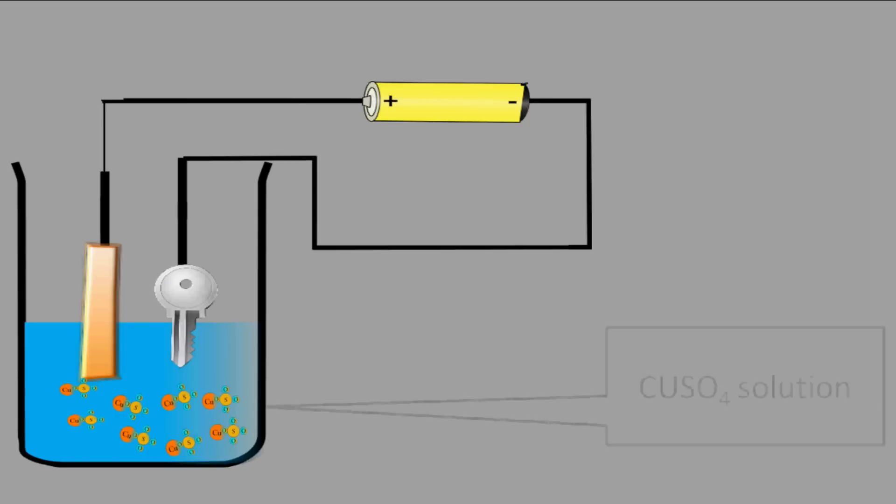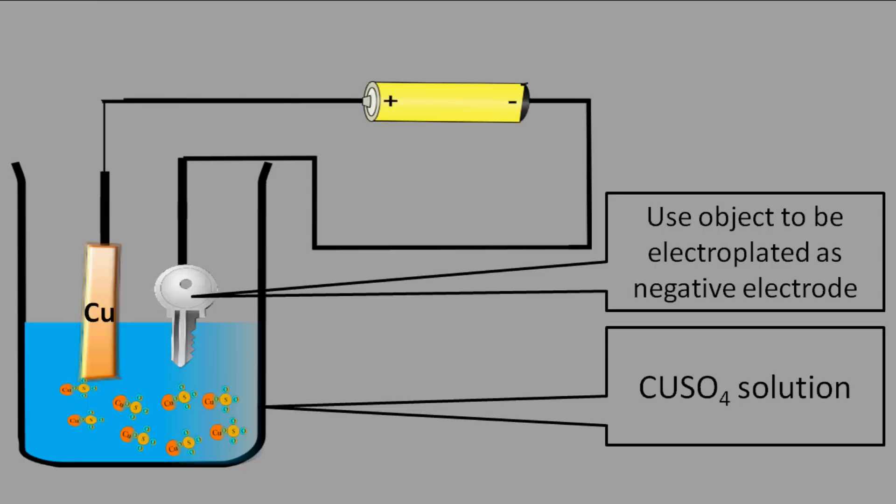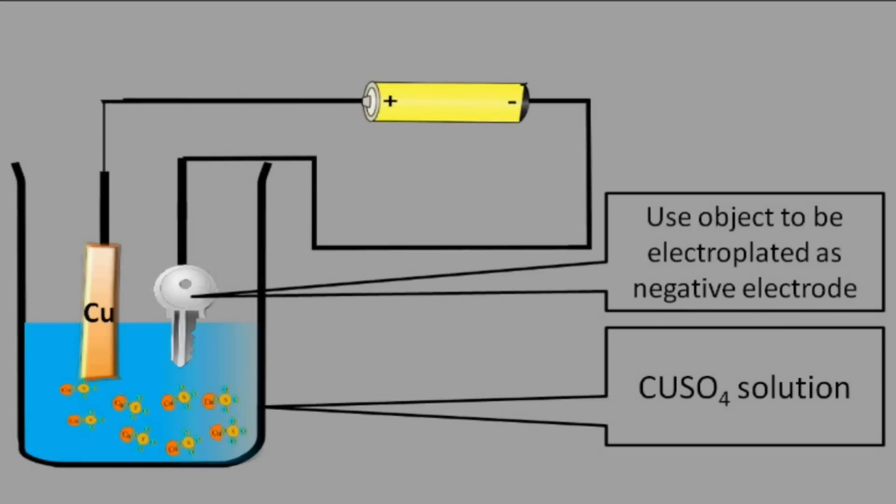First we make copper sulfate solution. Now we connect the key to the negative side of the battery using a wire. Then we put the key in the solution. Now we connect the copper piece to the positive side of the battery. You may add a switch to start and stop electricity flow.